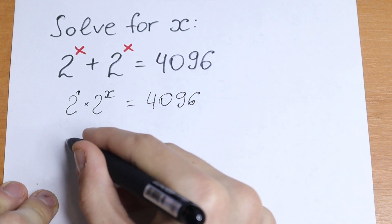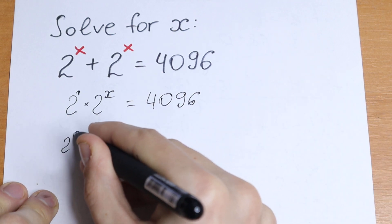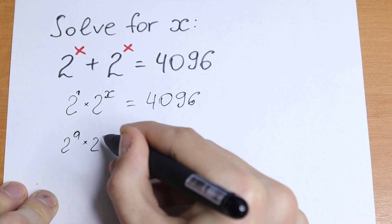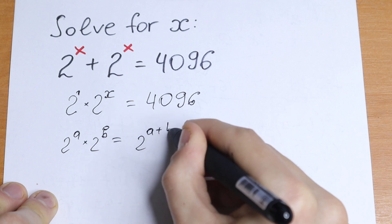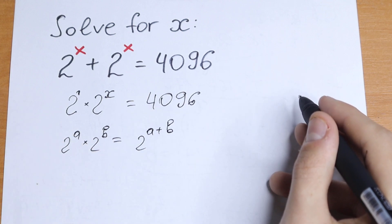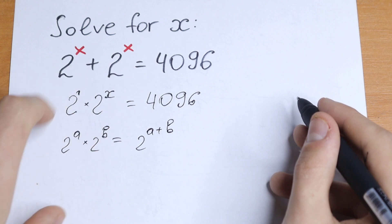We need to know the rule: if we have 2 to the power a times 2 to the power b, we can write it as 2 to the power a plus b, so we can add these exponents, these powers. So let's do this right here.